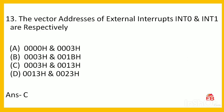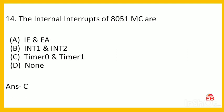Next: the internal interrupts of the 8051 microcontroller are — IE and EA, INT1 and INT2, timer 0 and timer 1, or none? The correct answer is timer 0 and timer 1 are the internal interrupts. Option C is correct.